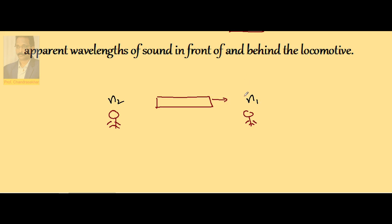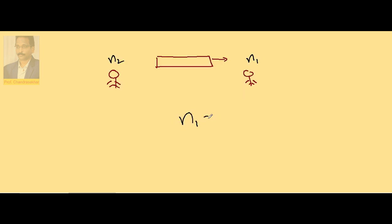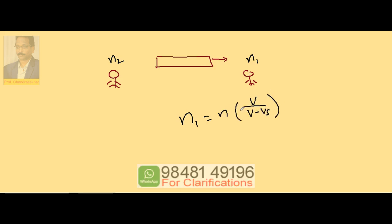Now what is the equation for N1? Source is approaching the observer at rest, so it is V by V minus Vs. Our interest is not frequency, our interest is wavelength. According to V equals N lambda, N1 can be written as V by lambda 1.